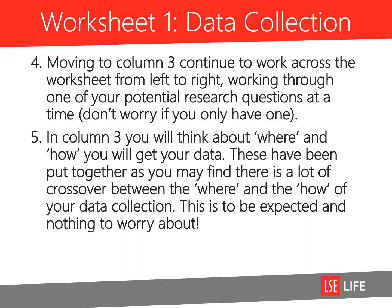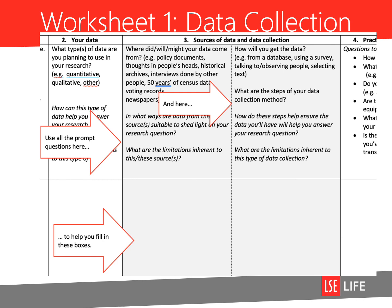Moving to column three, continue to work across the worksheet from left to right, working through one of your potential research questions at a time. In column three, you will think about where and how you will get your data. These have been put together as you may find there is a lot of crossover between the where and the how of your data collection — this is to be expected and nothing to worry about. Pause the screencast now and use all the prompt questions in these two columns to help you fill in the boxes below. Don't worry if you don't have an answer to all of these questions — these are here to act as prompts to help you clarify your thinking and ideas about your data. You don't need to provide an answer for everything.